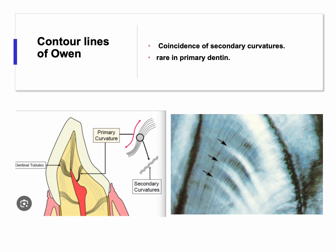The other kinds of structural lines are associated with the secondary curvatures inside the primary curvature. Remember this slide from part one — we talked about the S-shape of the tubules and said that inside this S-shape there are ups and downs. These ups and downs are seen as white lines called contour lines of Owen, and they represent coincidence of secondary curvatures.